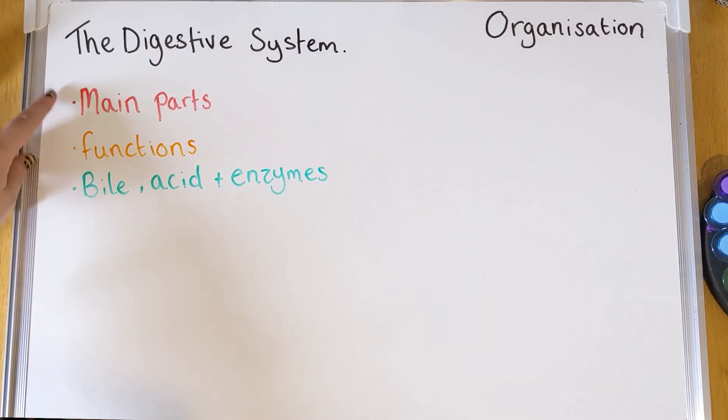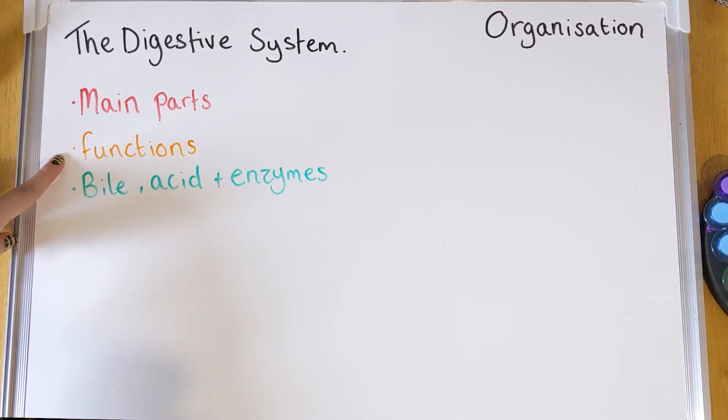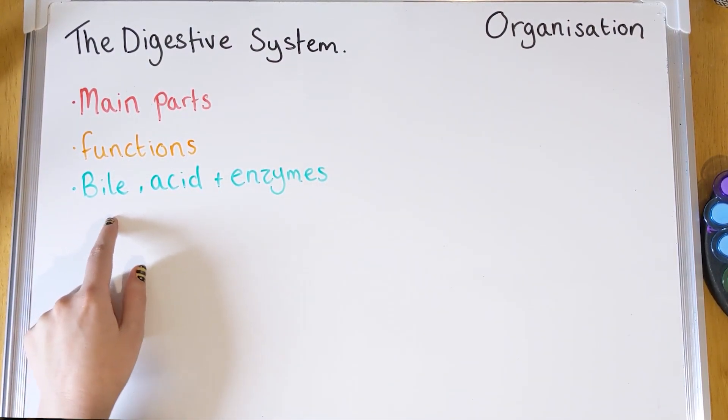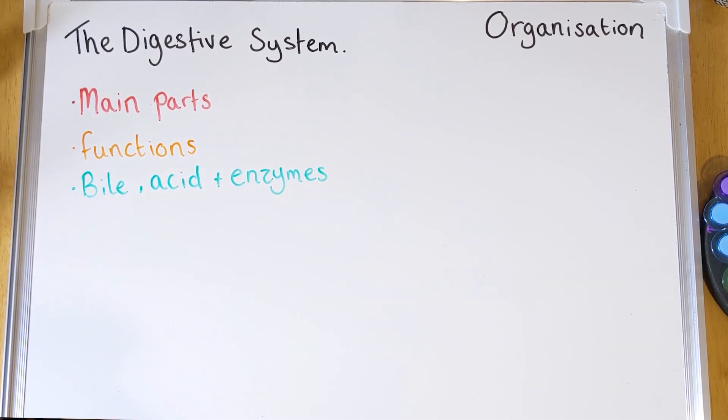Hi everyone, welcome back. Starting a new topic today called organization. This is going to cover the digestive system and enzymes, the heart, the lungs, blood, and then things like health issues and cancer as well. But for today we're just going to look at the digestive system - the main parts, the main organs you need to know, the functions of each, and then bile, acid, and enzymes. So looking at the chemicals that these parts of the digestive system make and what they do to help you break down your food.